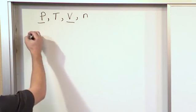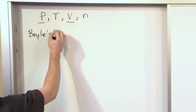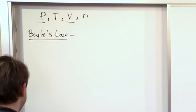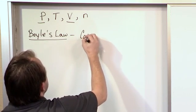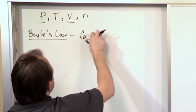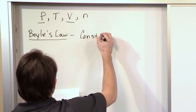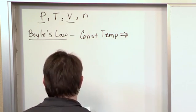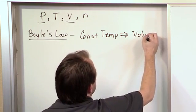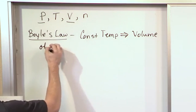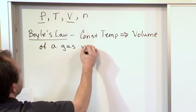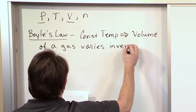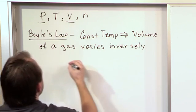So Boyle's law in words, this is how it's typically written in the book so I'll write it down real quick and we'll talk about it. At constant temperature, Boyle's law states the following: the volume of a gas varies inversely with the pressure.